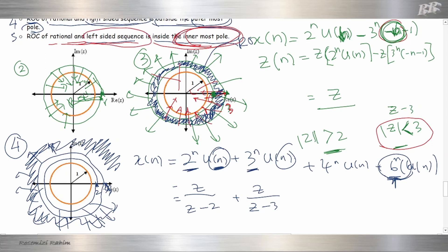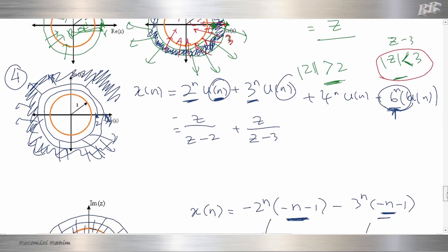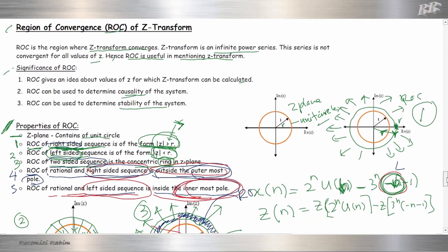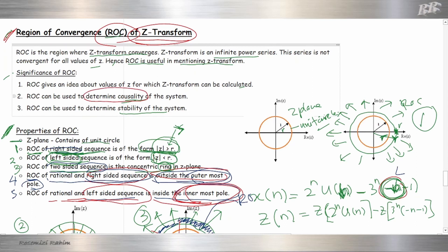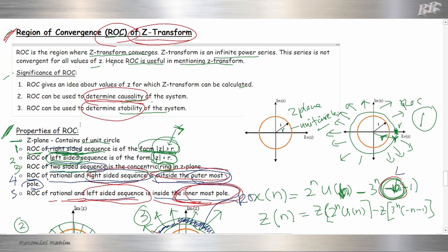If we have more than two poles for a right-sided sequence, the ROC is outside the outermost pole. That's all for Region of Convergence of the Z-transform. ROC is very important to determine the causality of the system and also to determine the stability of the system. Thank you, bye bye.